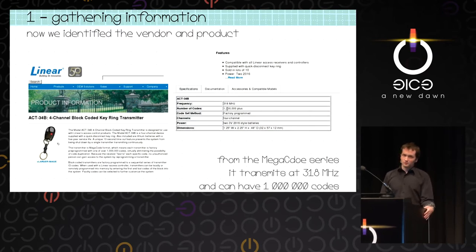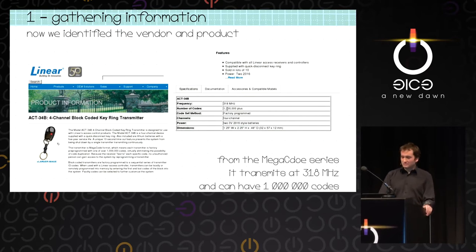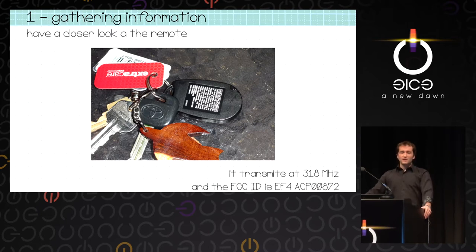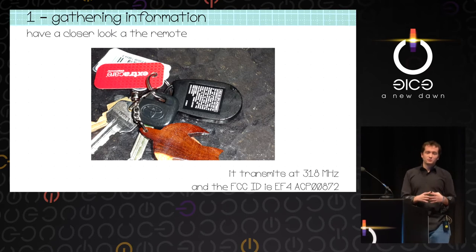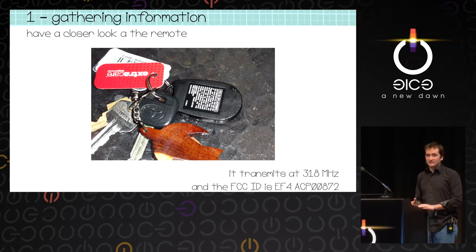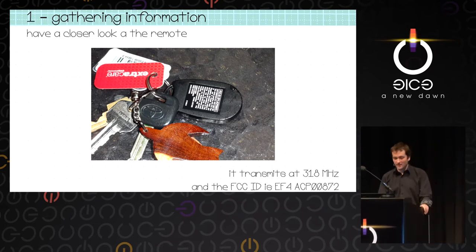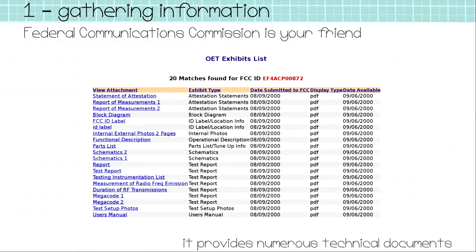On the website, we can find it — the product still exists. We know it operates on 318 MHz and can send one million codes, but the manual doesn't tell a lot. We already know the transmit frequency, but we want more information. If we look at the remote on the top, there is an FCC ID. In the US, whenever a manufacturer wants to produce something which transmits radio, they have to comply to regulations and send test reports to the FCC showing it complies to FCC Part 15 for radio transmission.